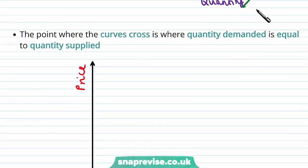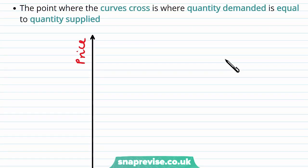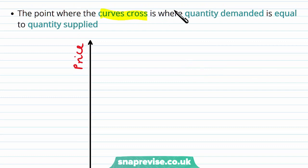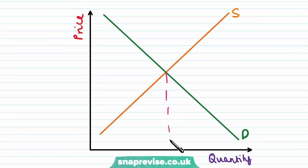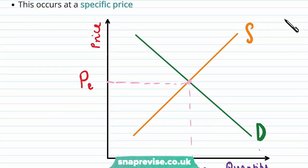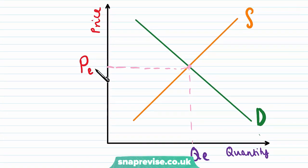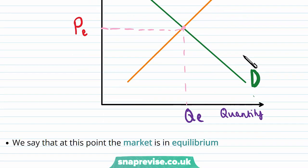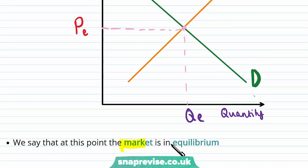What can we learn from this? It is the point at which the curves cross where the quantity demanded is equal to the quantity supplied. On this curve, where they cross, QD is equal to QS. This actually occurs at a very specific price, which we call the price equilibrium — which is also the quantity equilibrium, where quantity demanded and quantity supplied are equal given the price equilibrium. And this is where we say that the market is in equilibrium.